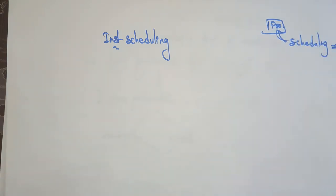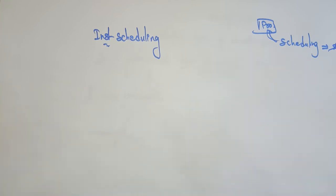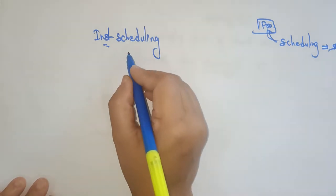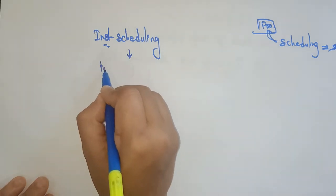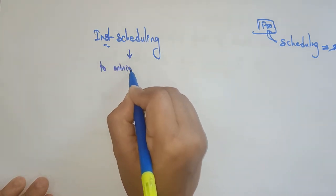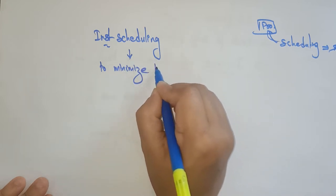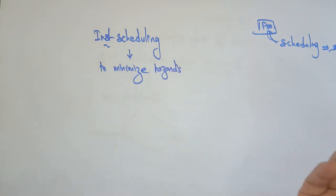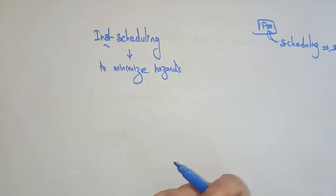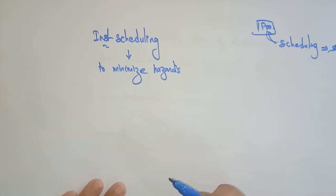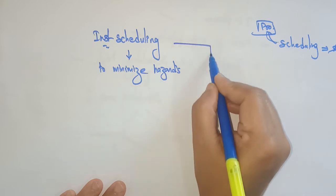Without scheduling, the processor cannot execute, or it takes a lot of time. To overcome that waiting time, we use the scheduling concept. Instruction scheduling is used to minimize hazards — hazards are basically a gap between instructions, a waiting time or errors. To minimize hazards, we use instruction scheduling. This instruction scheduling is of two types: static scheduling and dynamic scheduling.